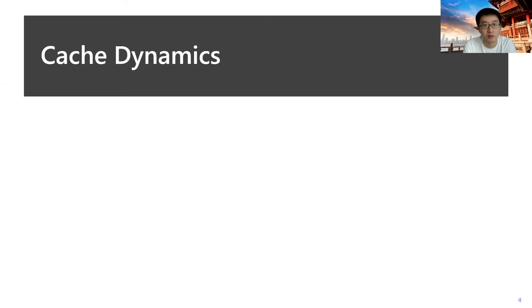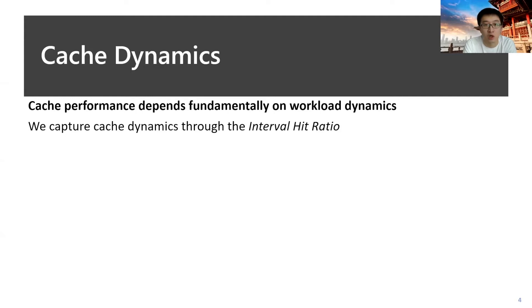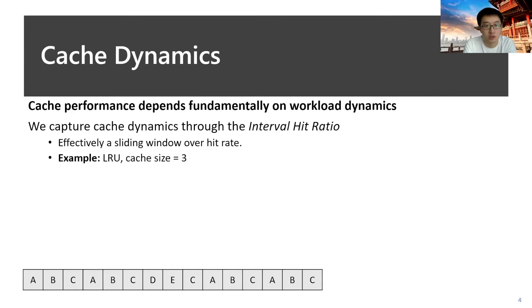Cache is dynamic because the workload could also be dynamic in different systems. It could have different patterns that turn into different cache behaviors, where cache performance depends a lot on those dynamic behaviors. We captured cache dynamics with a new metric we call the interval hit ratio. It's actually a sliding window over the hit rate for your workload.